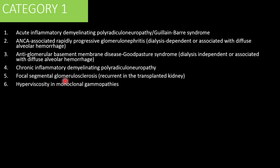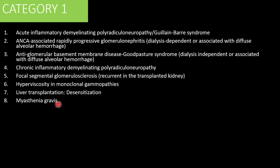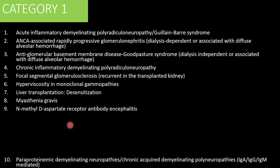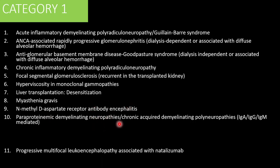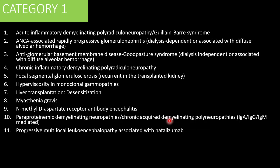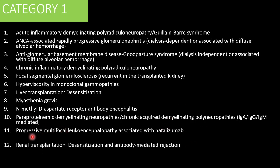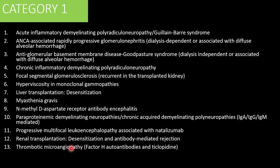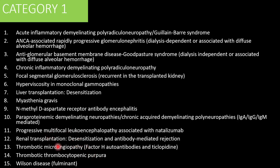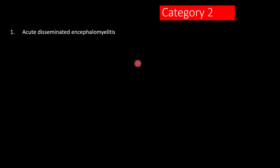Also under Category 1: hyperviscosity syndrome because it removes immunoglobulins, liver transplantation for desensitization — and not only for liver transplant but also for kidney transplant to remove preformed antibodies — myasthenia gravis, NMDA receptor antibody encephalitis, drug-induced CNS conditions, renal transplant desensitization, thrombotic microangiopathy if due to specific complement-mediated antibodies, TTP, and fulminant Wilson's disease. These are the Category 1 recommendations where plasmapheresis is shown to be of good benefit.